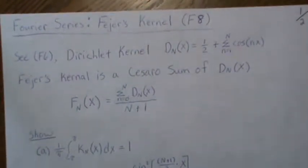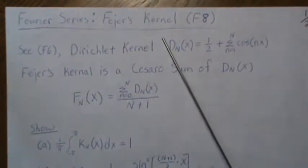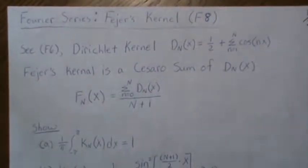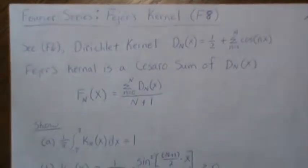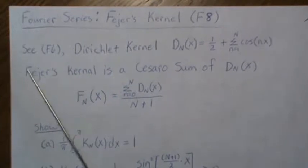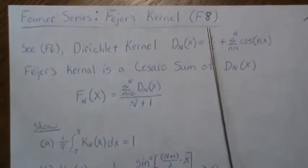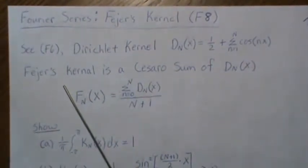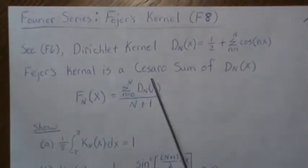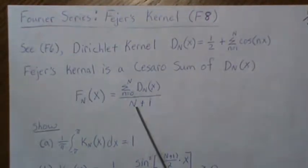In this video we're going to look at Fejér's kernel — he's a Hungarian mathematician. We're looking at the Fejér kernel because we're going to need it when we look at the Fejér theorem in regards to Fourier series. It's really a Cesàro sum, and I'm probably not pronouncing either of these names correctly but should be close. So it's a Cesàro sum of the Dirichlet kernel.